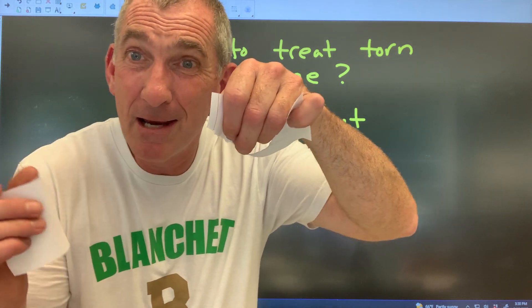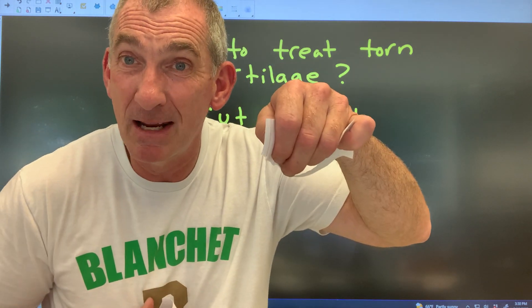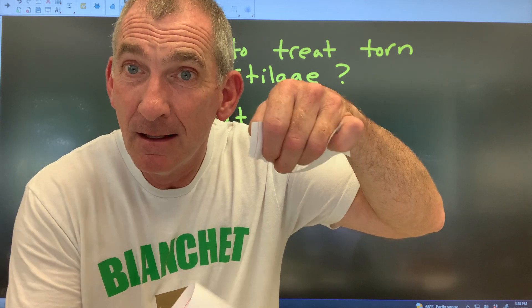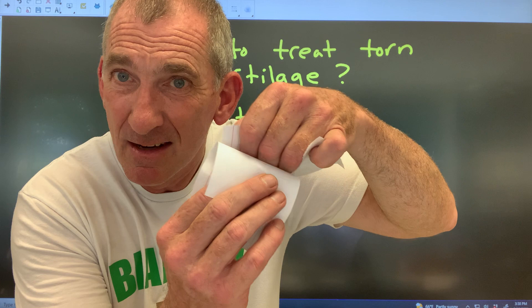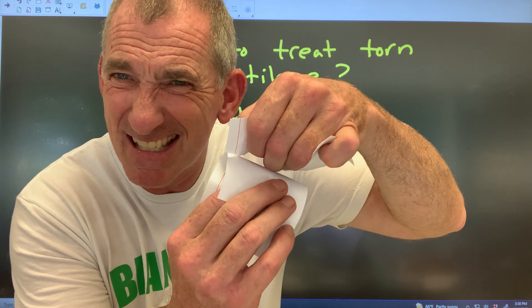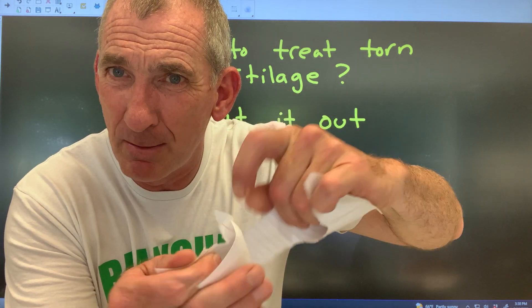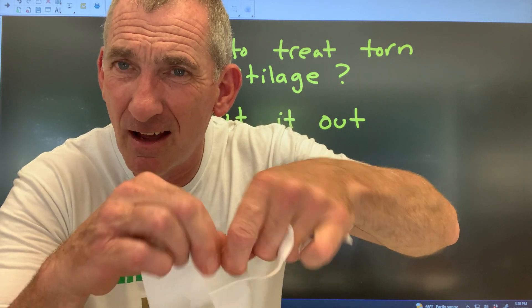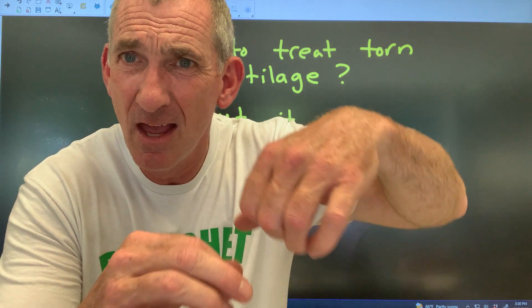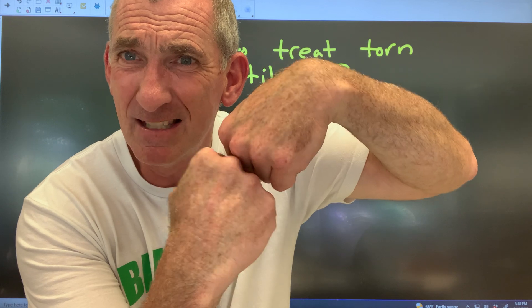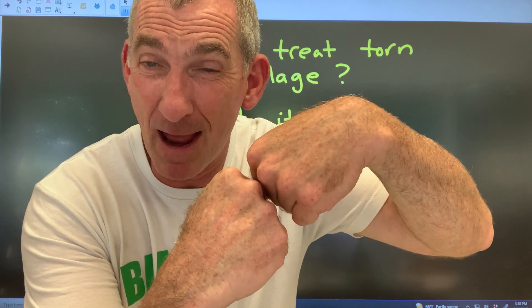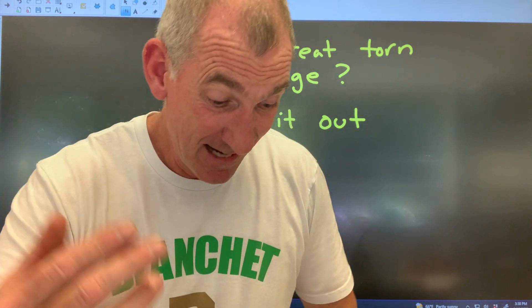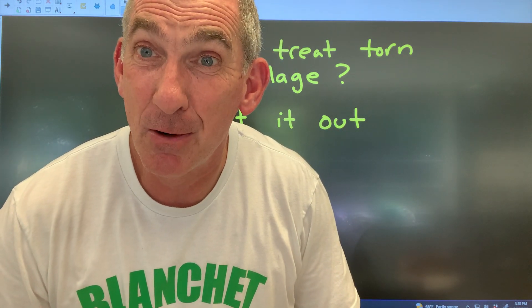Cartilage is the slippery stuff covering the spongy bone. Spongy bone is made up of needle-like pieces. So when the cartilage is gone, those needle-like pieces start ripping into the other side's cartilage, and now Brandon Roy walks with a huge limp because the ends of his bones have no cartilage — they're just grinding back and forth. Next week we're going to talk about how to get a joint replaced.